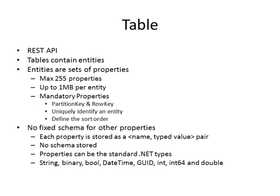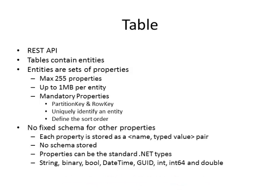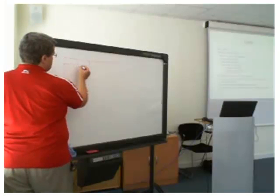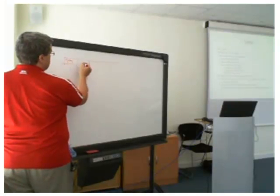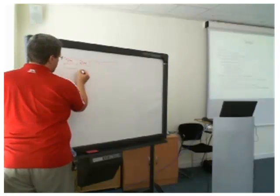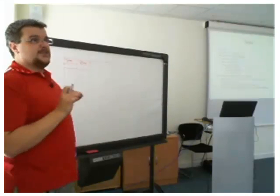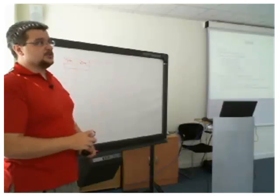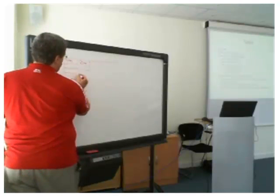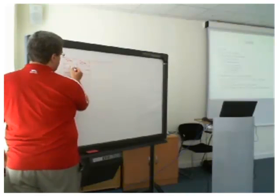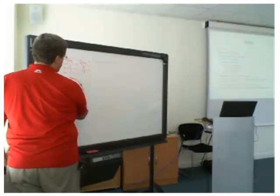So they're a bit strange, especially when you come at it from SQL. One of the things you have — you have two rows: a partition key and a row key. These uniquely identify every single entity in your table. All of your entities must have a partition key and a row key.